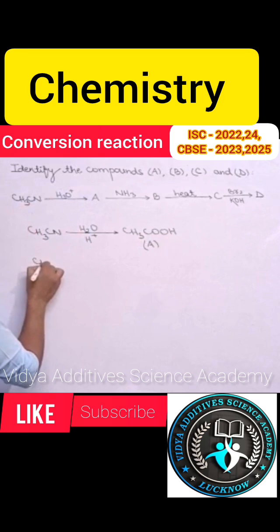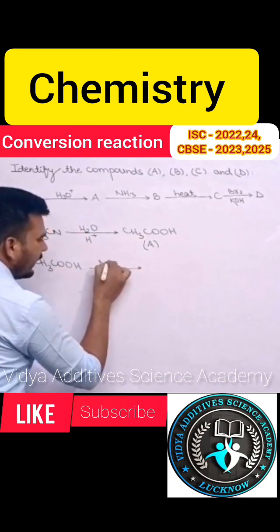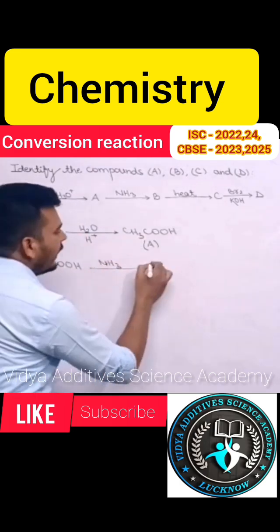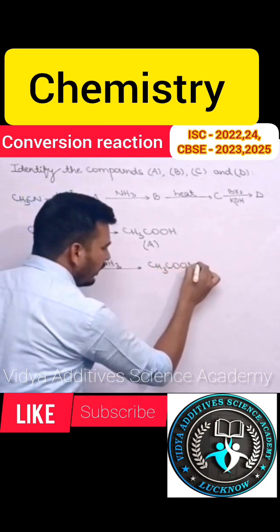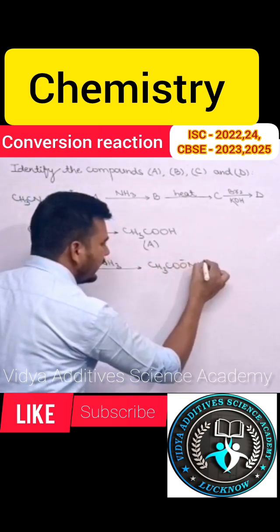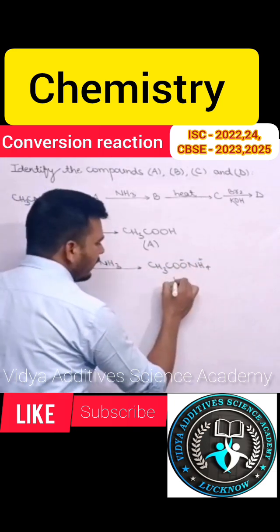Further compound A, that is acetic acid, it reacts with ammonia. When acetic acid reacts with ammonia, it will convert into ammonium acetate. So ammonium acetate is CH3COO NH4 plus. It is compound B.